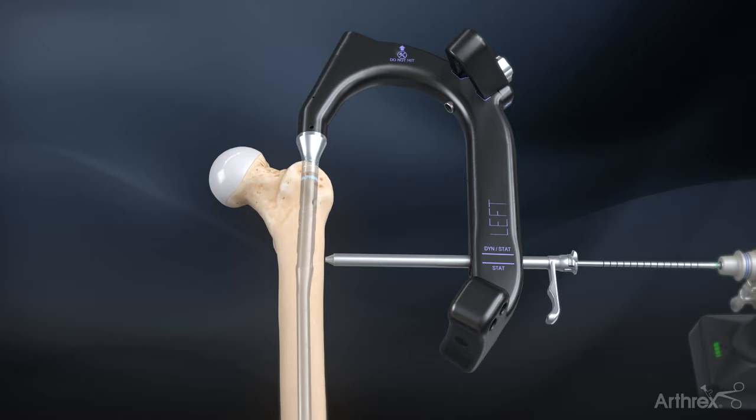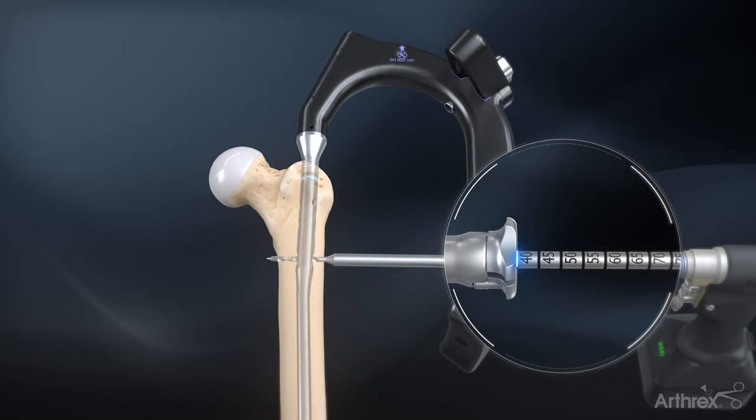Remove the obturator and drill the bone using the 4 mm calibrated drill. Measure the screw length from the end of the drill guide using the calibration marks on the drill.